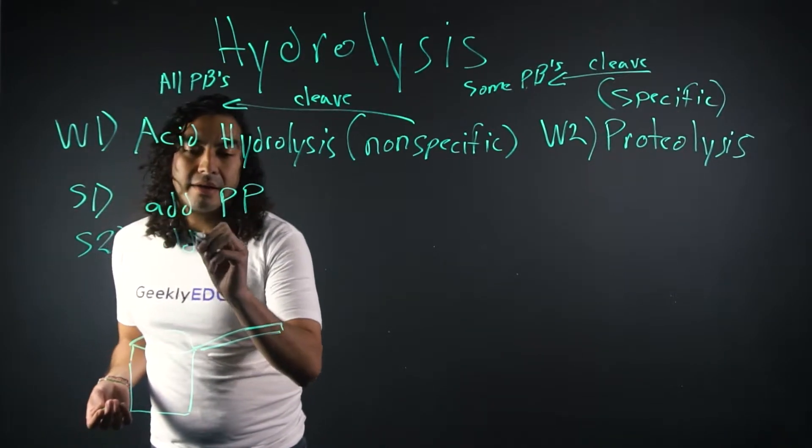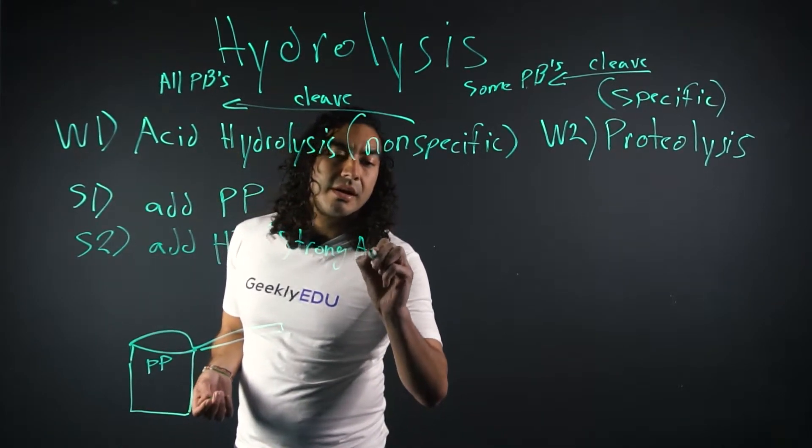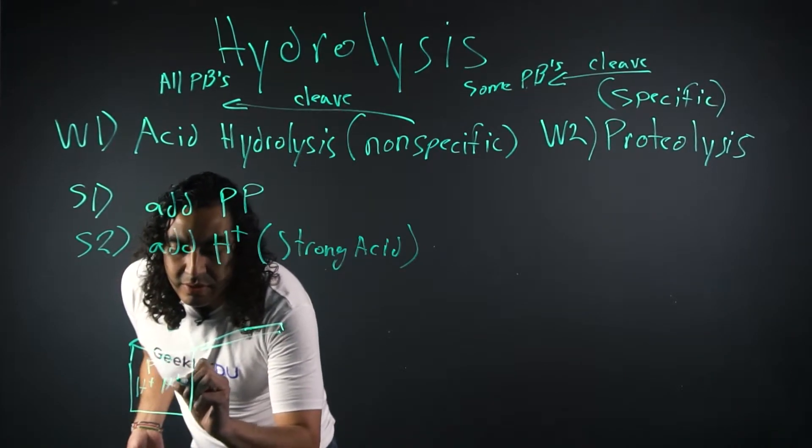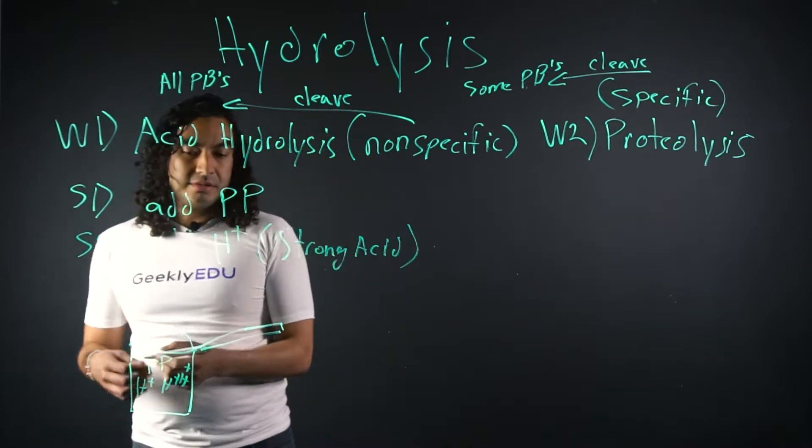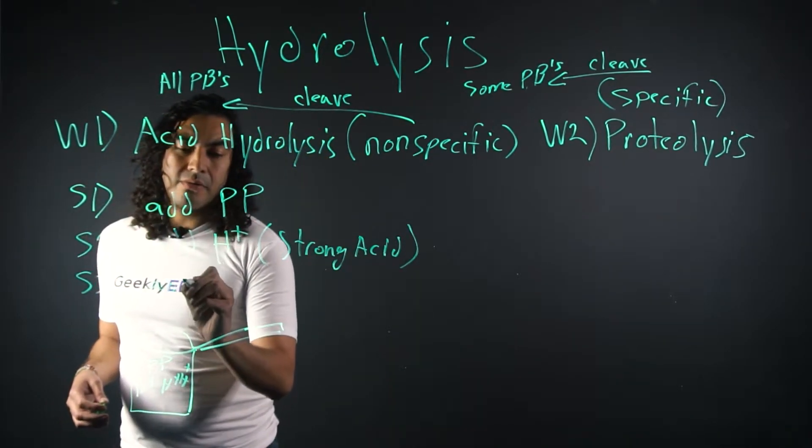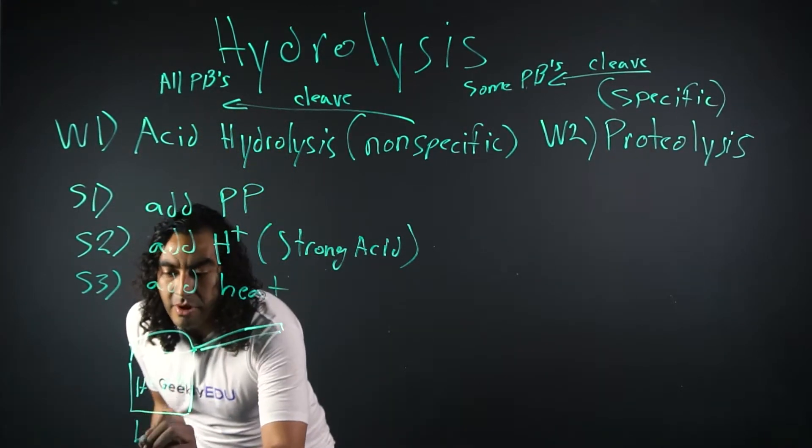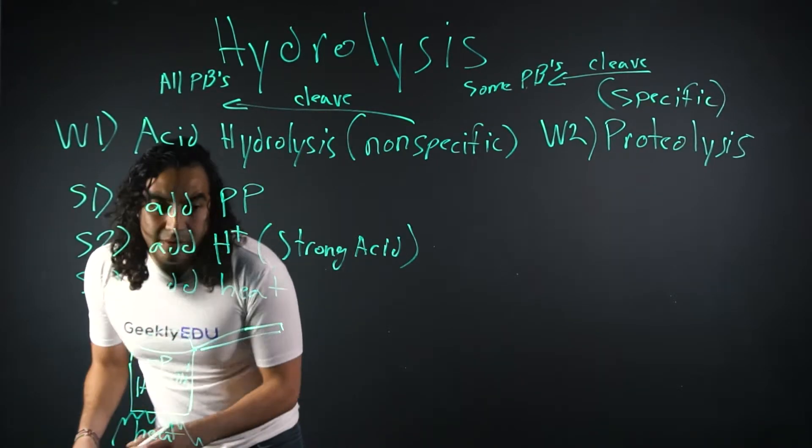Step two, we're going to add a strong acid. So strong acid. Step two. And step three, we're going to add heat. So we're either going to turn on our Bunsen burner or turn on our stove, just going to get some heat, get a little flame going.